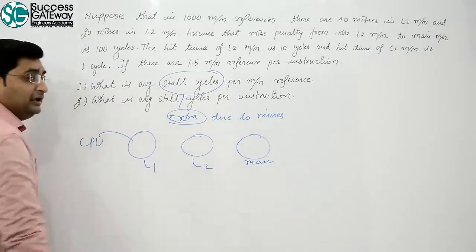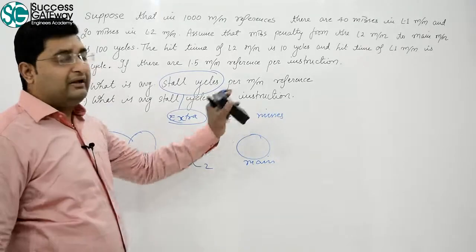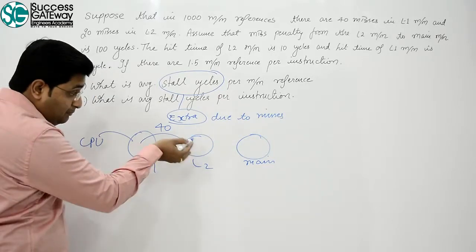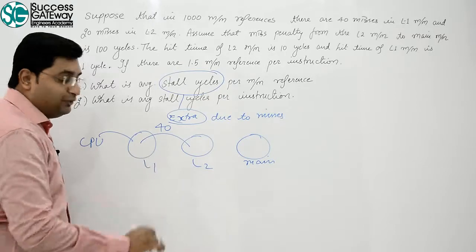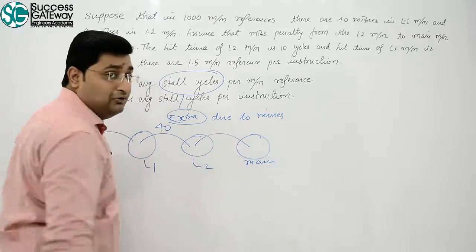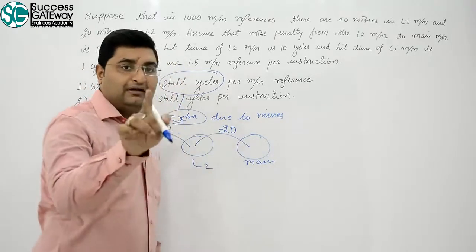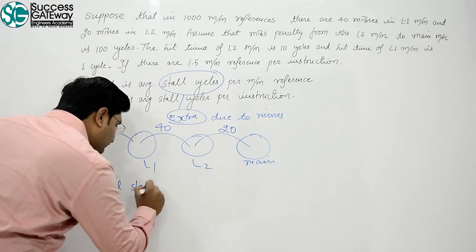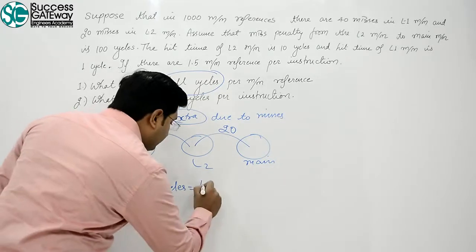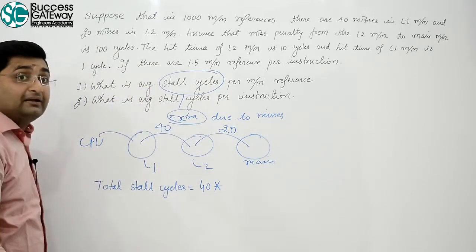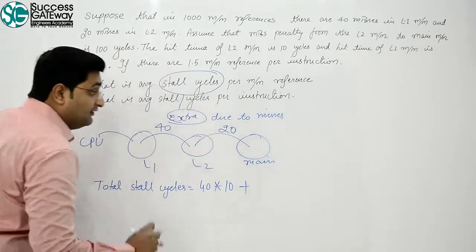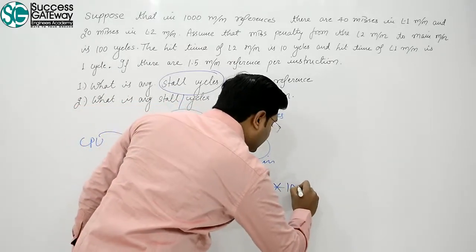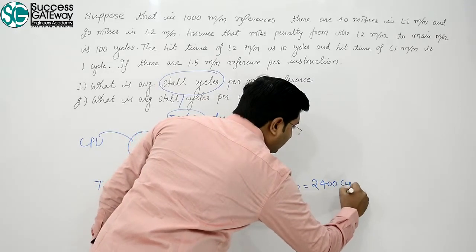If everything were a hit, then one clock cycle per memory reference would suffice. But from L1 there are 40 misses, meaning I have to go to L2 for 40 references. And from L2 I have to go to main memory for 20 references. So total stall cycles = 40 × hit time of L2 = 40 × 10, plus 20 × miss penalty from L2 to main memory = 20 × 100. That gives 2400 clock cycles.